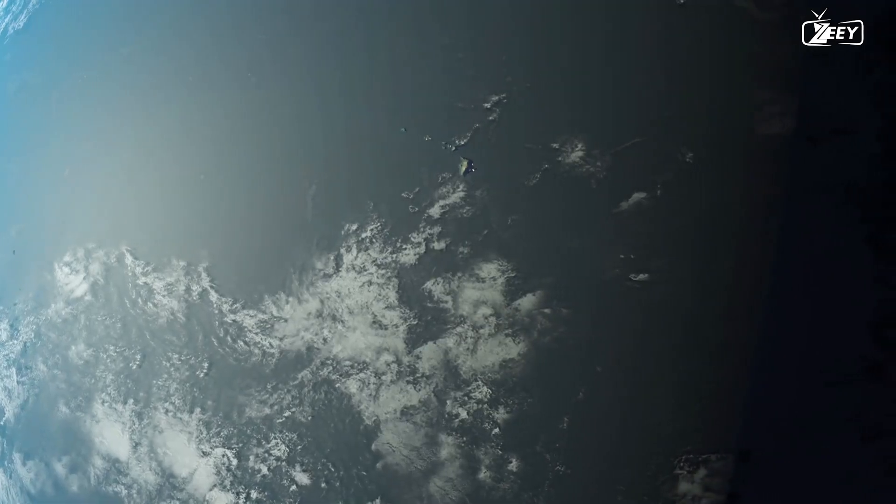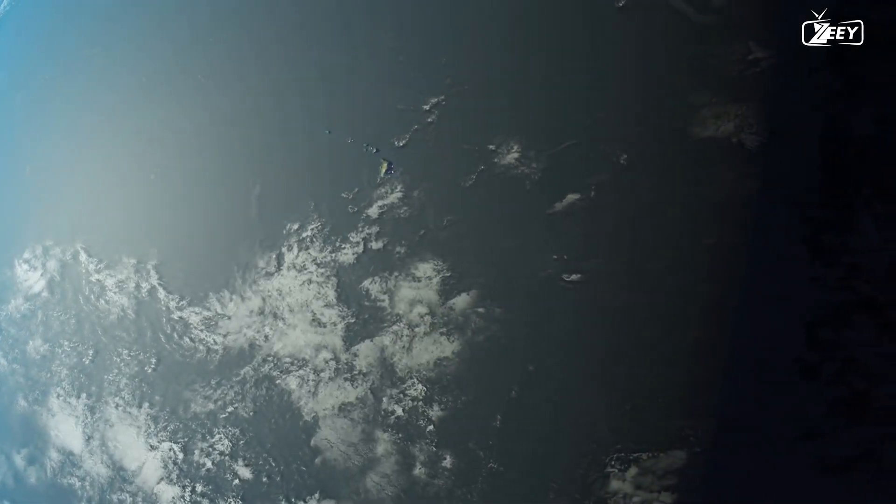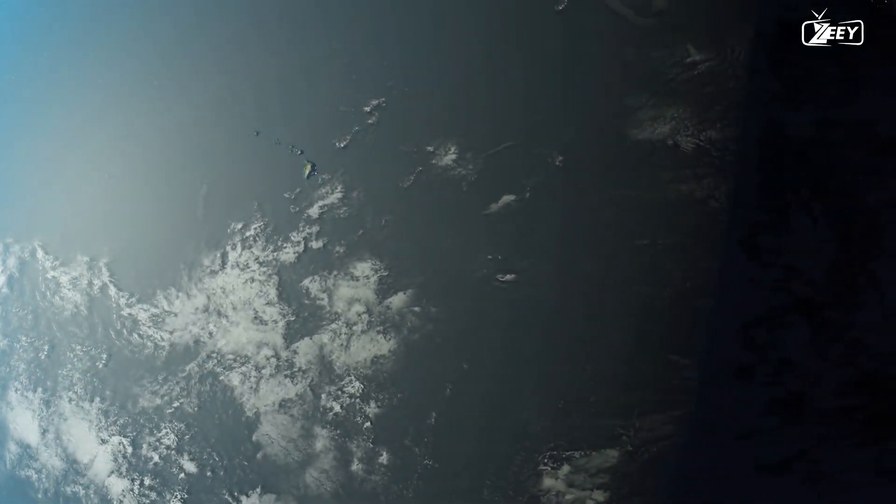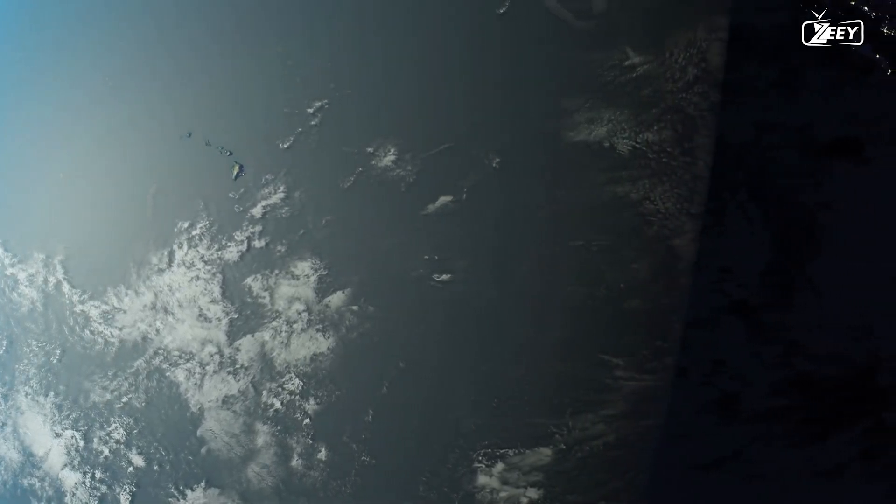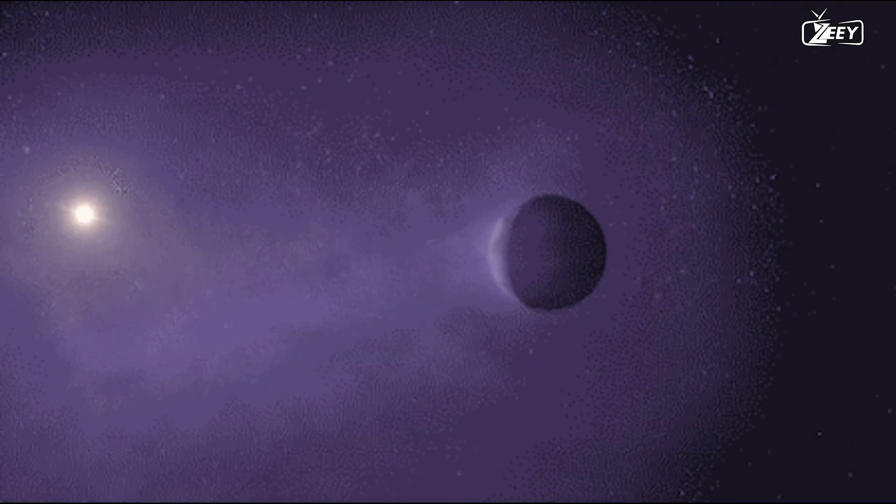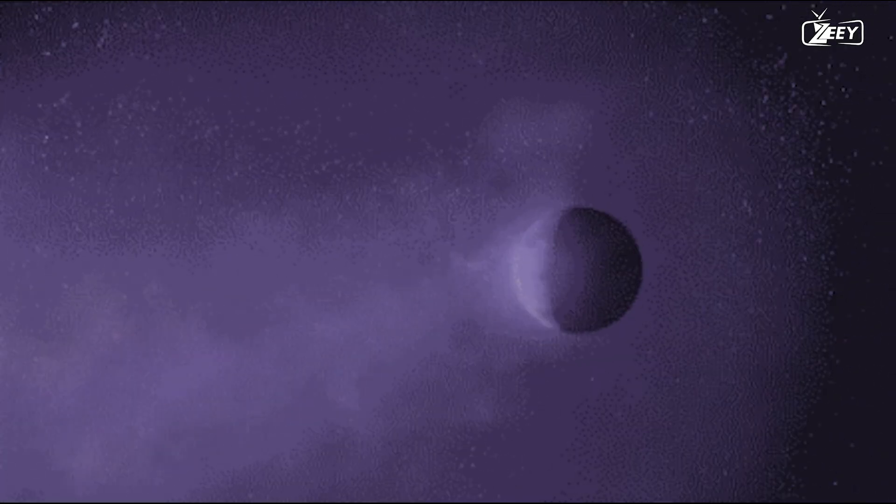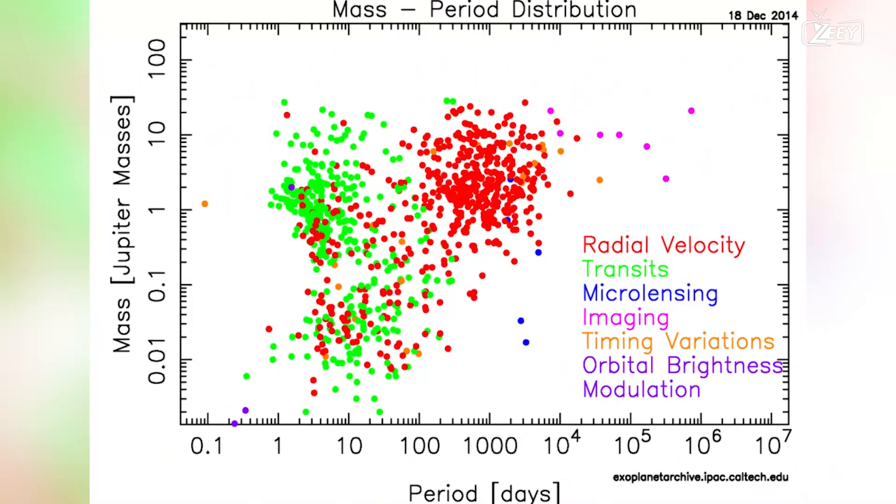The team that found Kepler-22b was led by William Borucki, Kepler's chief investigator at NASA Ames Research Center at Moffett Field, California, who commented: Fortune smiled upon us with the detection of this planet. Take a look at this plot to better understand what we're talking about.